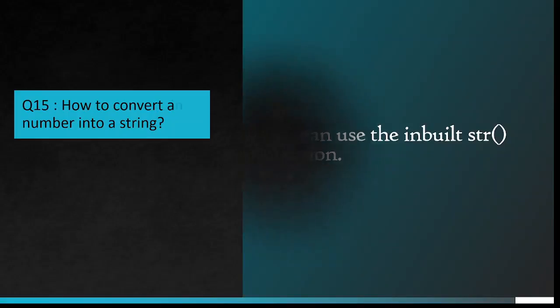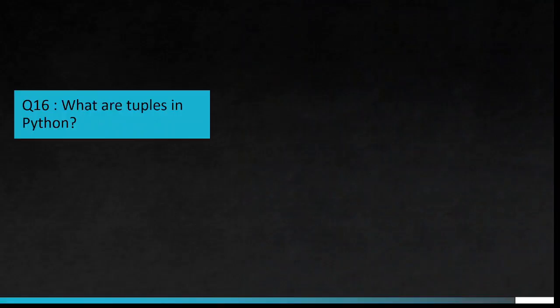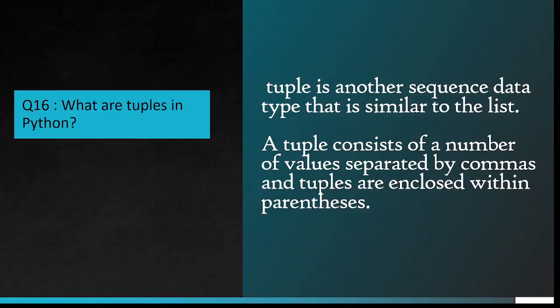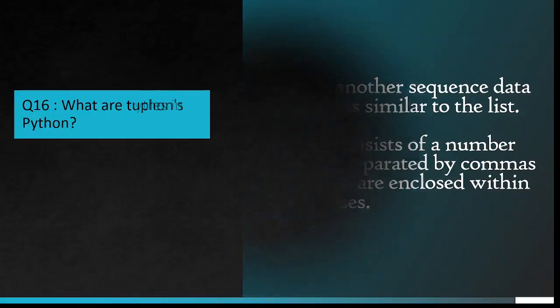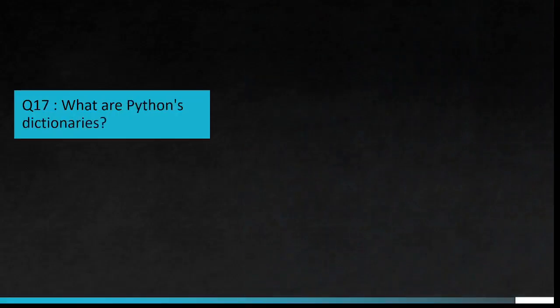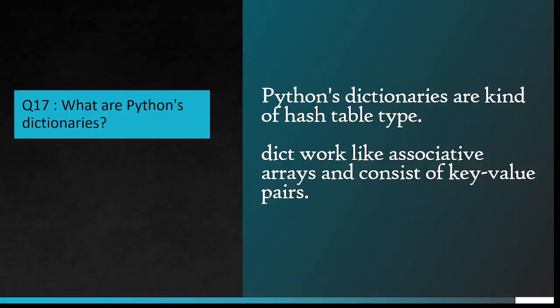Question number 16: What are tuples in Python? Tuple is another sequence data type that is similar to the list. A tuple consists of a number of values separated by commas and tuples are enclosed within parentheses. Question number 17: What are Python's dictionaries?